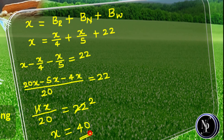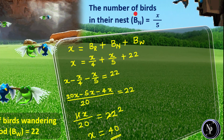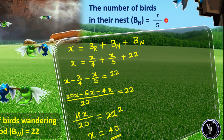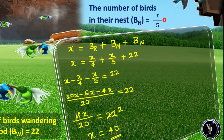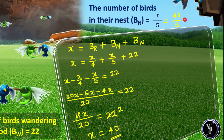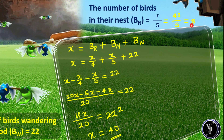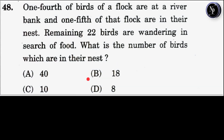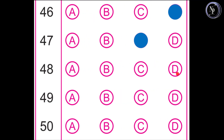But this is not the required solution. We are asked to find the number of birds in the nest, which is x divided by 5. Since x is 40, we substitute: 40 divided by 5, giving us 8. Therefore, 8 is the required answer. In answer option D, the answer 8 is given, which is the number of birds in their nest. Let us mark answer option D as the correct answer for question number 48 on the OMR answer sheet and move to the next question.